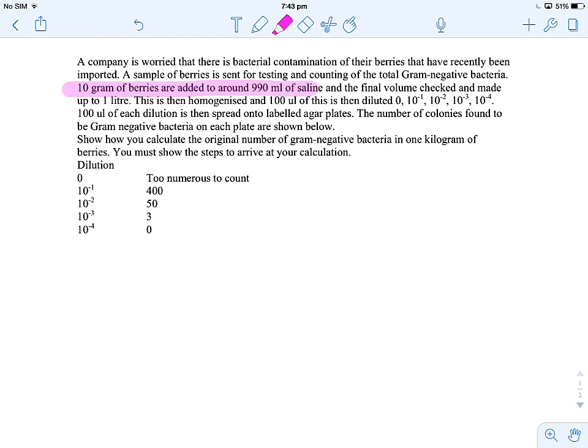So 10 grams made up to a thousand. To go from 10 to a thousand you have to multiply by 10 to the 2. So there's our first dilution.